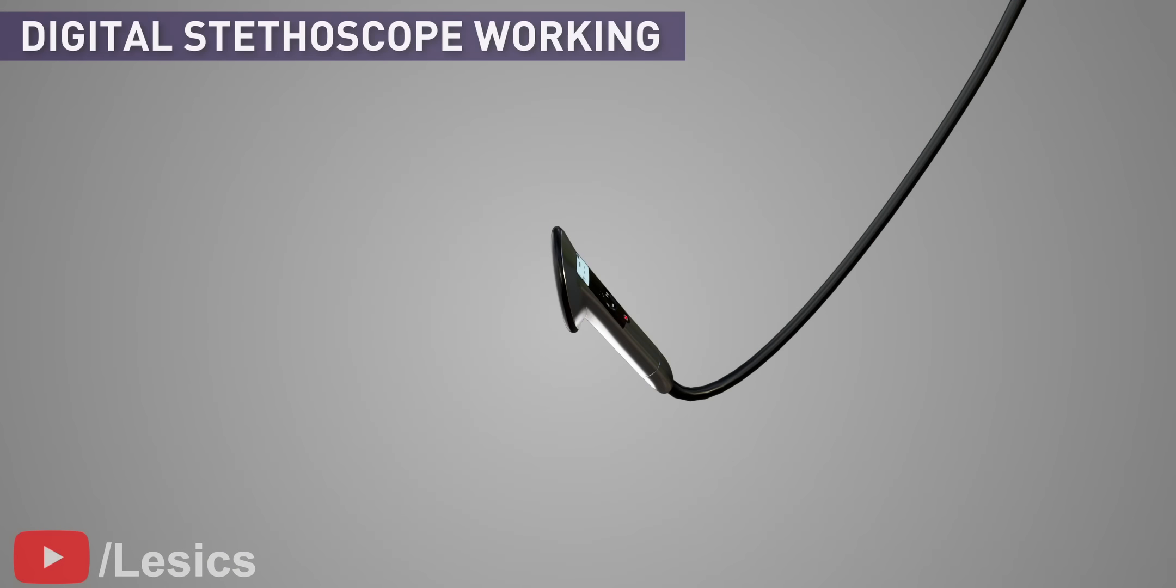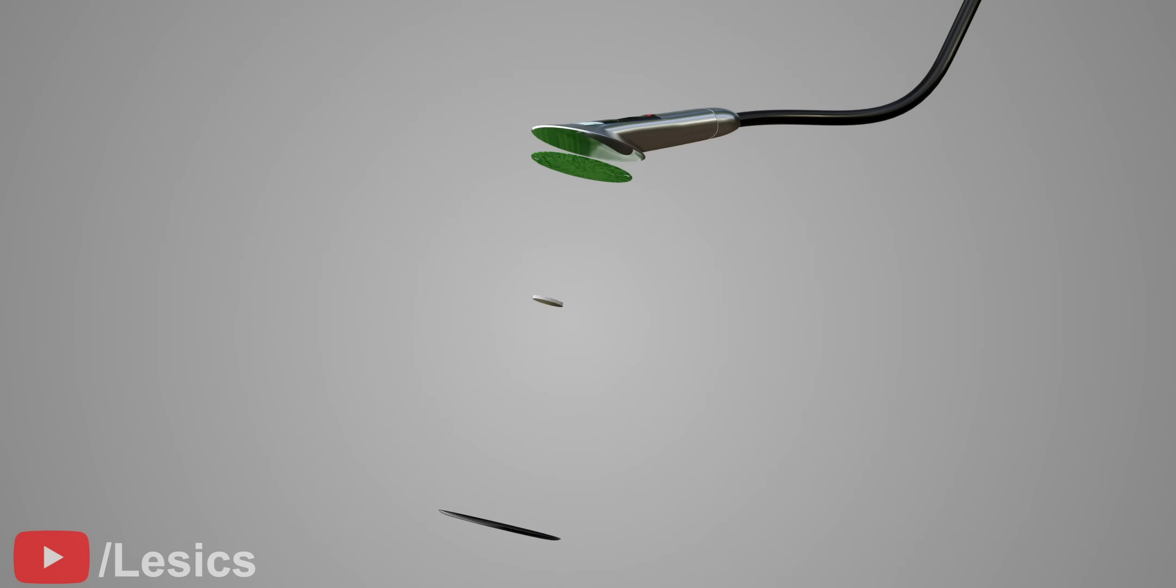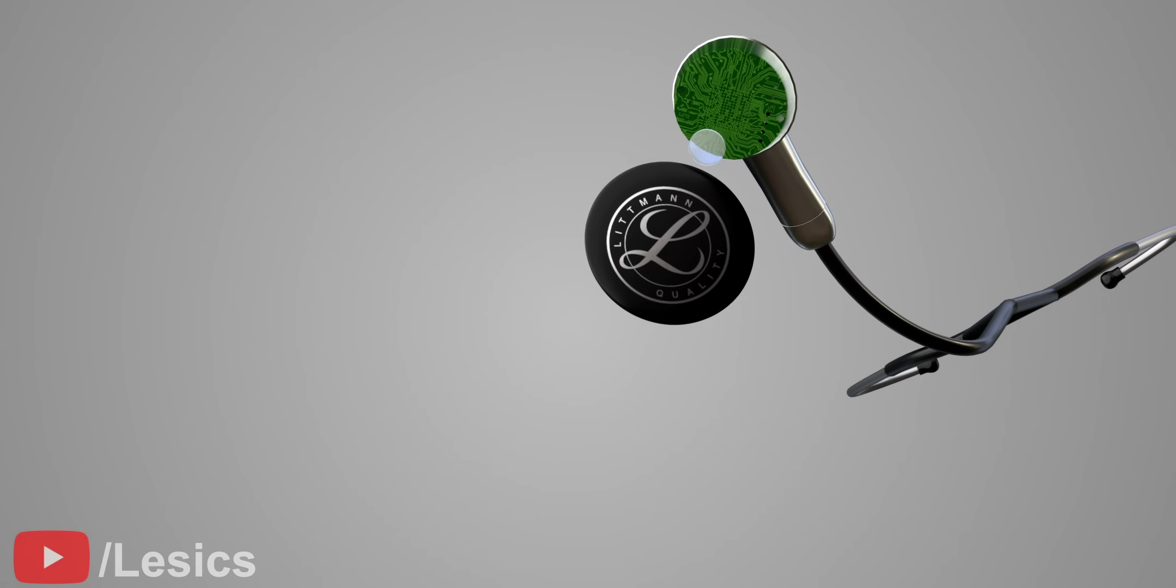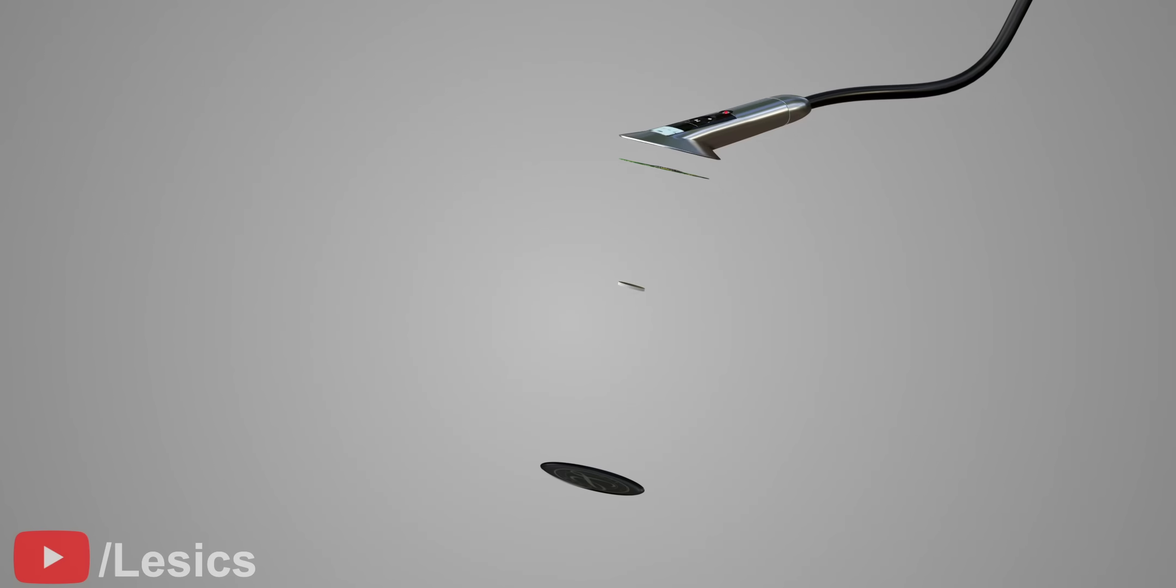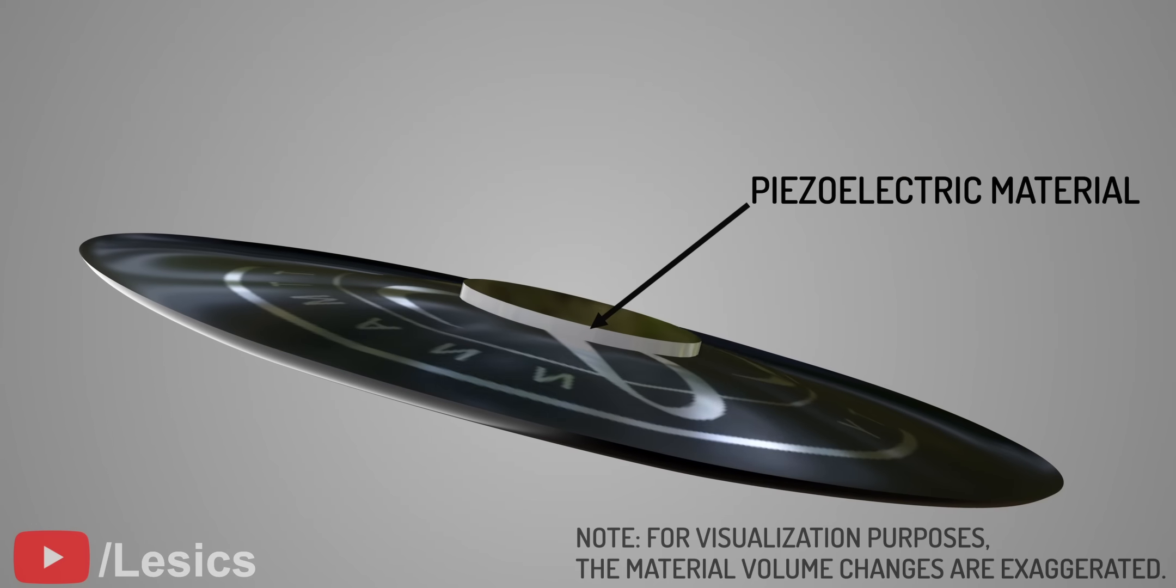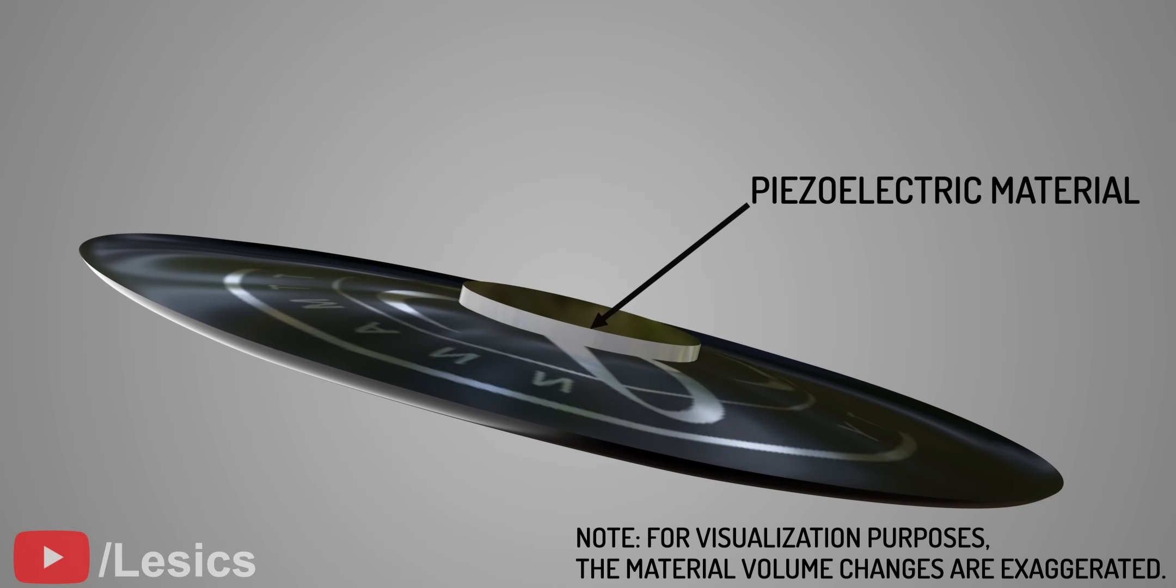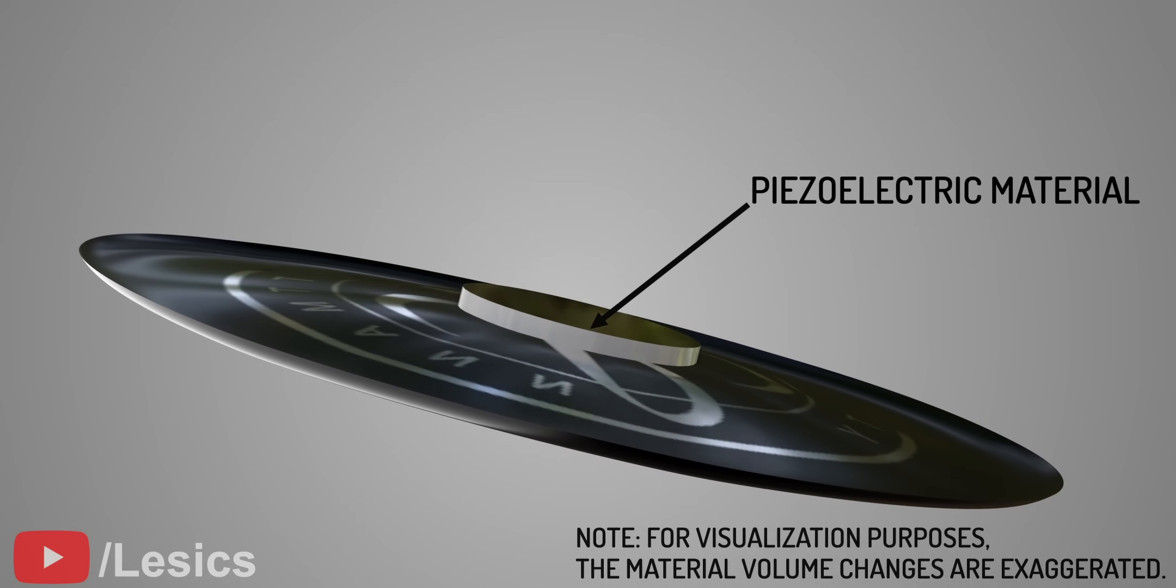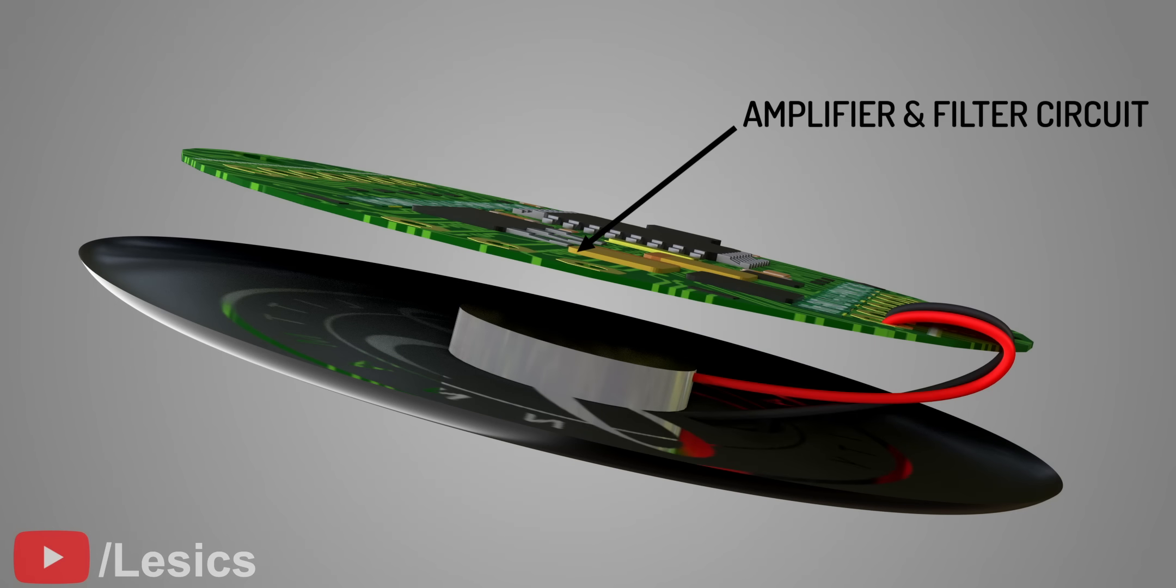Now, let's study the working of an electronic stethoscope. The electronic stethoscope has a very thin diaphragm connected to the piezoelectric material. When the sound waves hit the diaphragm, it oscillates, making compressions or expansions in the piezoelectric material. This produces voltage across the material proportional to the amount of deflection. The voltage is then transferred to an amplifier and filter circuit to get the desired output.